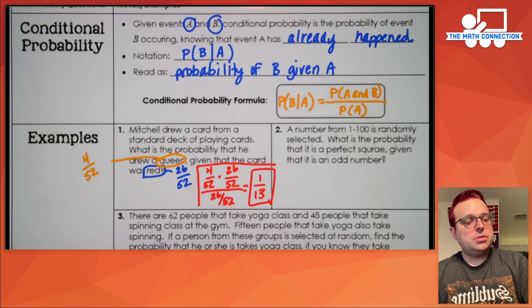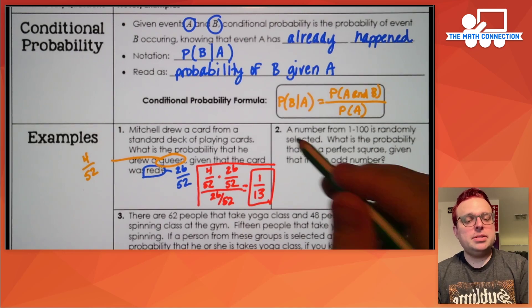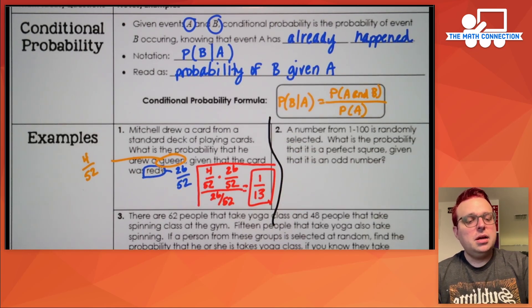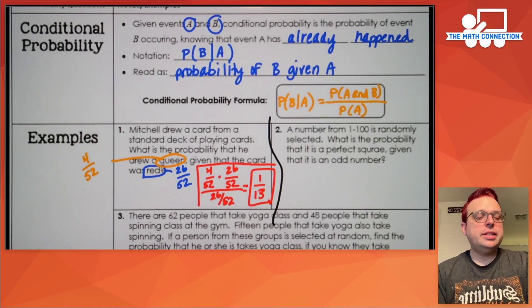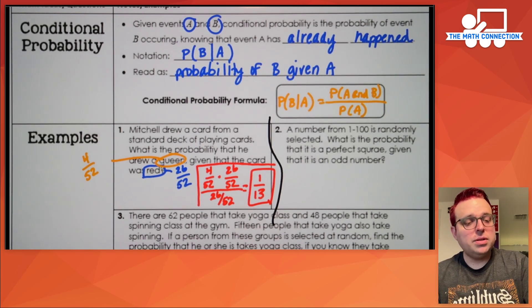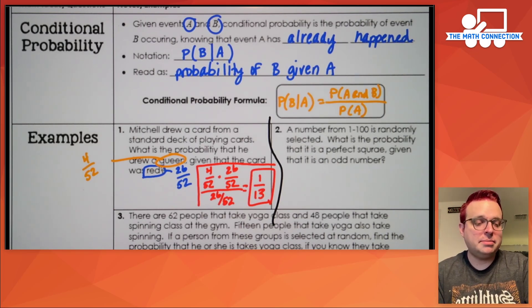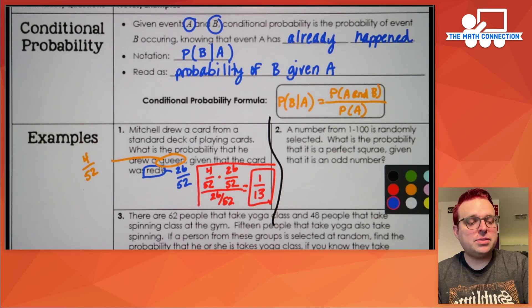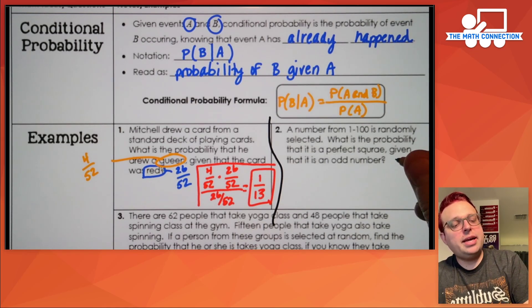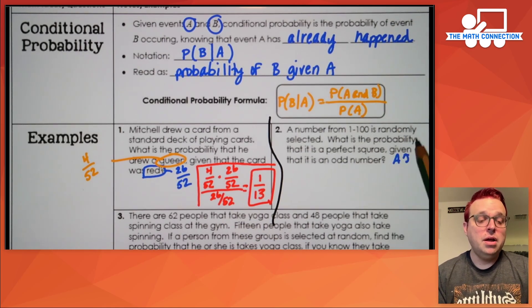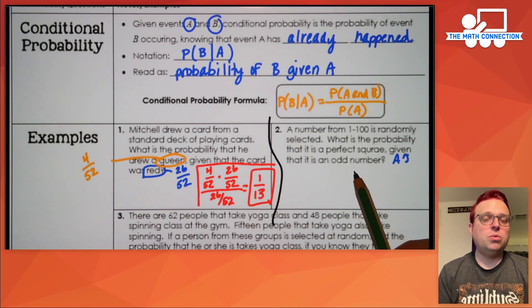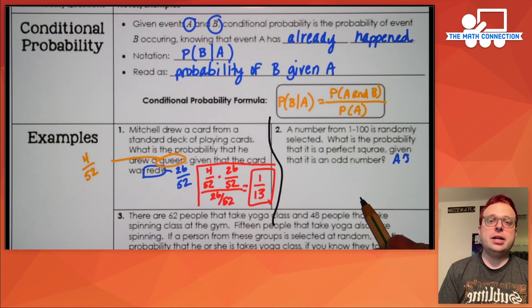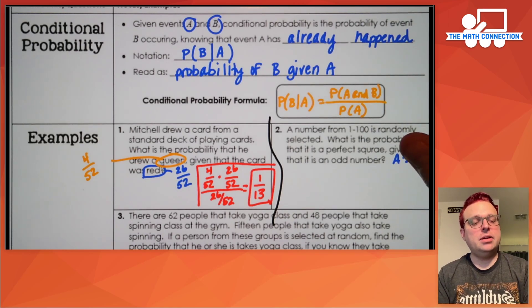The next problem: a number from one to a hundred is randomly selected. What's the probability that it is a perfect square given that it is an odd number? The thing you're given is event A — that goes in the denominator. The probability that it's an odd number: if you're counting from one to a hundred, half of those numbers will be odd and half will be even, so this is 50 out of 100.